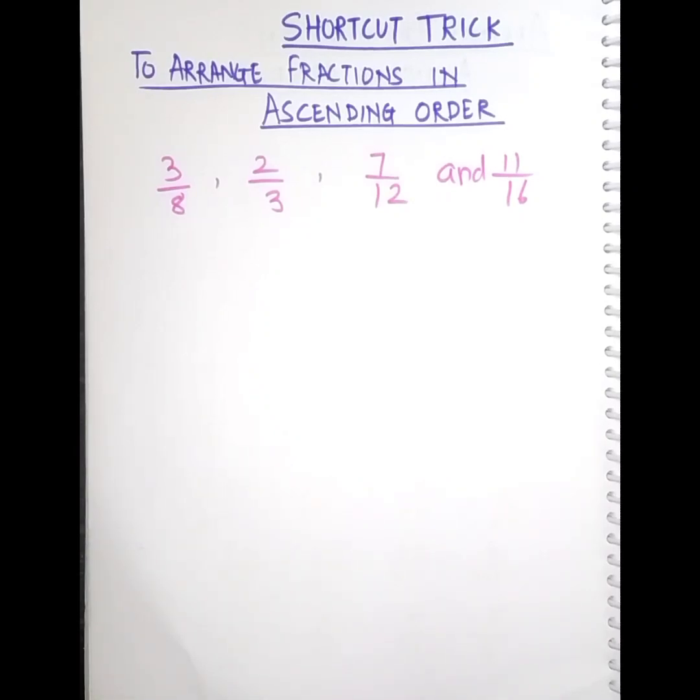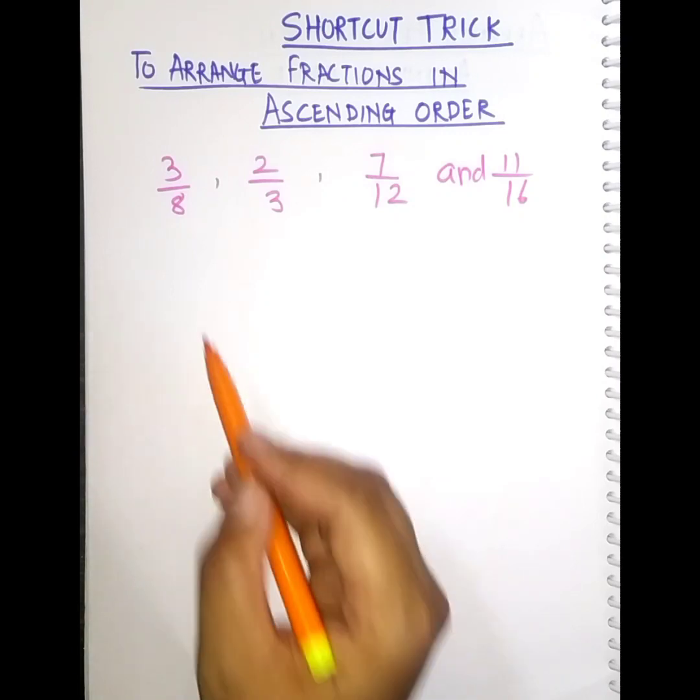Now let's see the shortcut trick to arrange fractions in ascending order. So for that, what you have to do is take any two fractions and just cross multiply them.